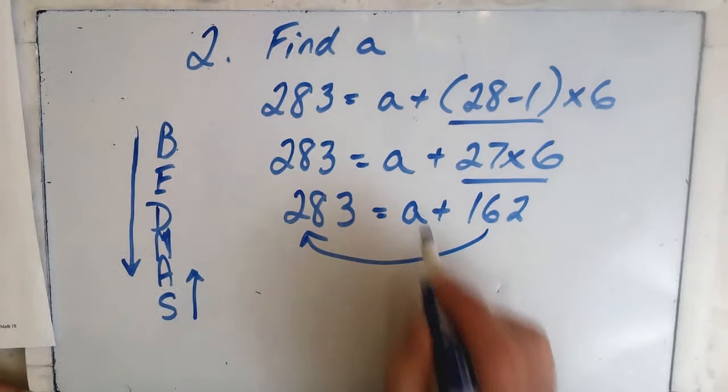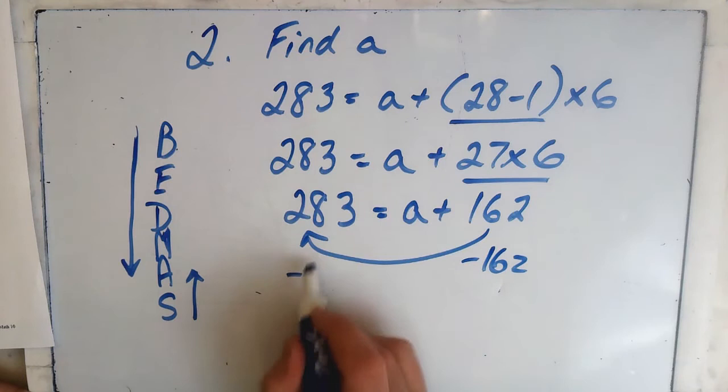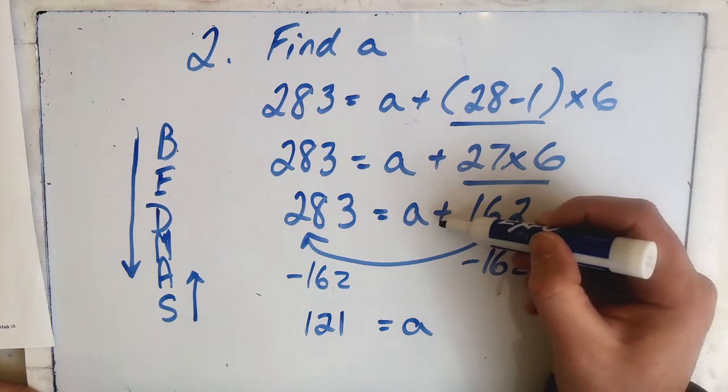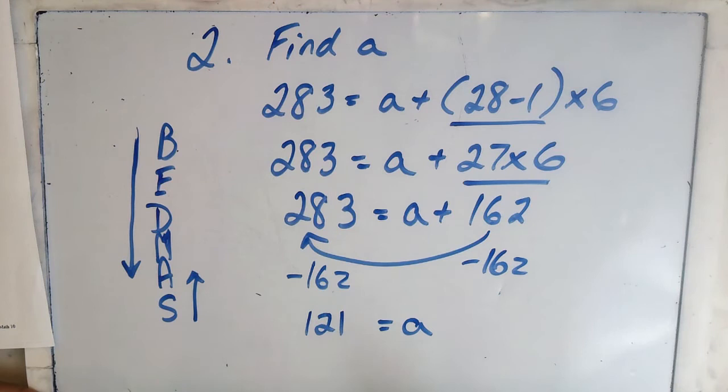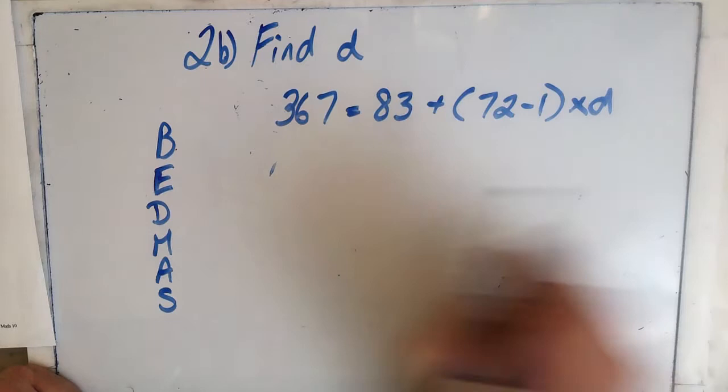Now that we're stuck, we have to switch to algebra. We have to move the 162 to the other side, and to move it we do the opposite — we do the opposite to both sides. To review: we always start with BEDMAS, go as far as we can, and once we reach a step with a letter in it, we switch to algebra and move the numbers over.